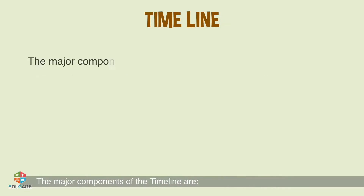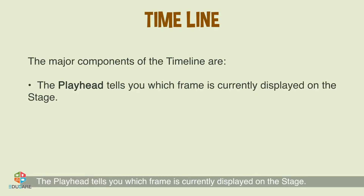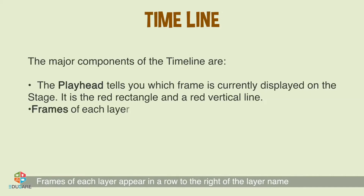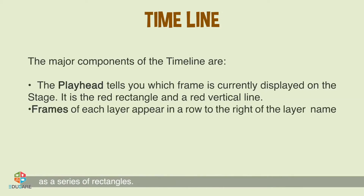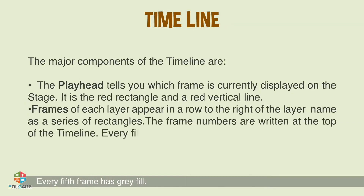The major components of the timeline are: The playhead tells you which frame is currently displayed on the stage. It is the red rectangle and a red vertical line. Frames of each layer appear in a row to the right of the layer name as a series of rectangles. The frame numbers are written at the top of the timeline. Every fifth frame has grey fill.